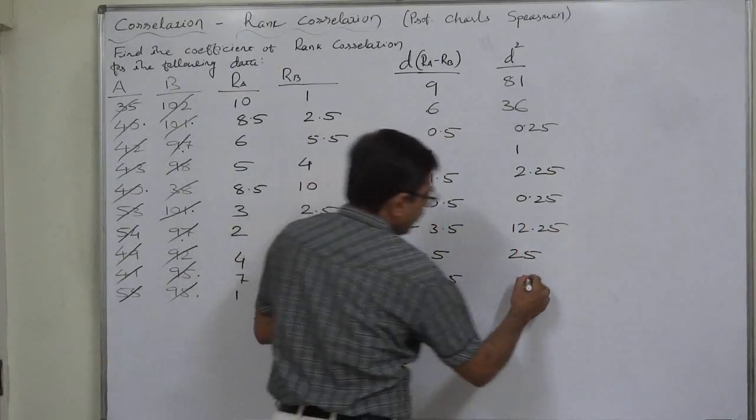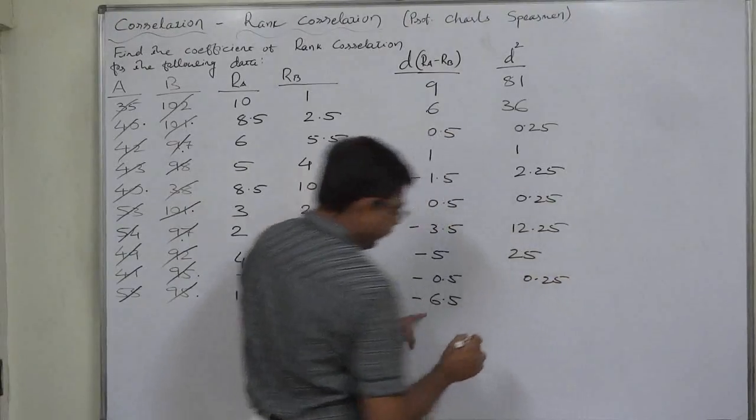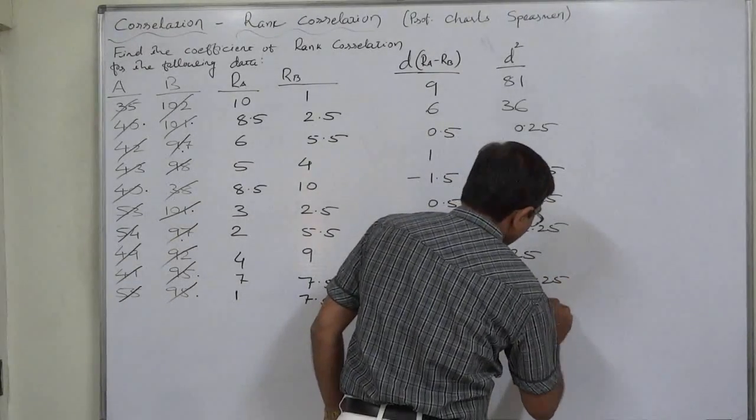For 0.5, it will be 0.25 and for 6.5, it will be 42.25.